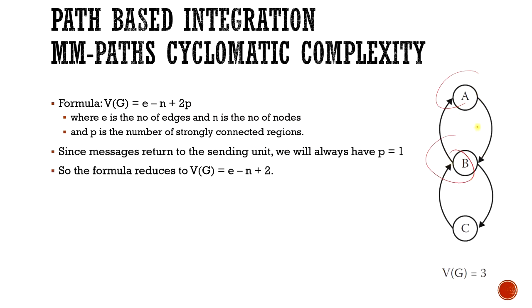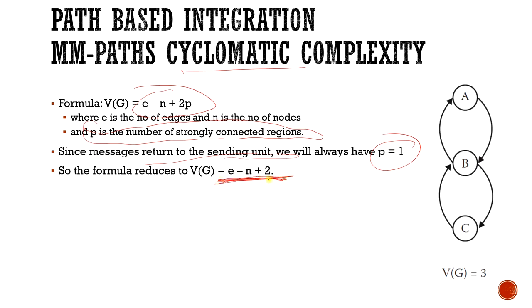The formula is V(G) = e - n + 2p, where e is the number of edges and n is the number of nodes, and p is the number of strongly connected regions. Generally, the MM-path always has p=1, since messages return to the sending unit. So the formula reduces to V(G) = e - n + 2. Here we have three nodes and four edges, so 4 - 3 + 2 = 3.